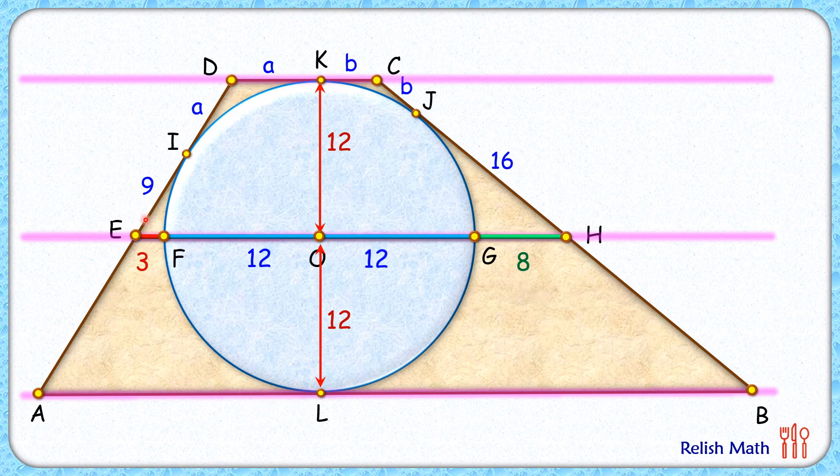So here this length DE will be the same as EA. Now DE is 9 plus A, so EA length will be 9 plus A. Same way here CH and HB will be equal and thus the length HB will be 16 plus B cm.